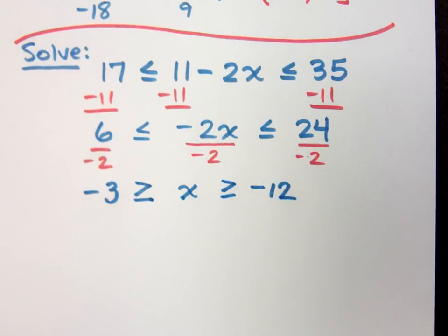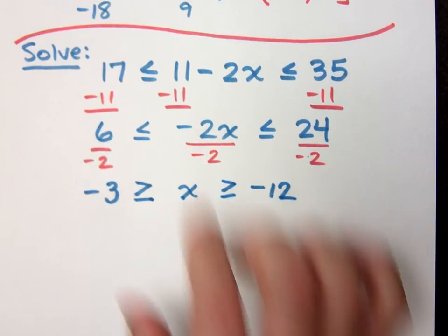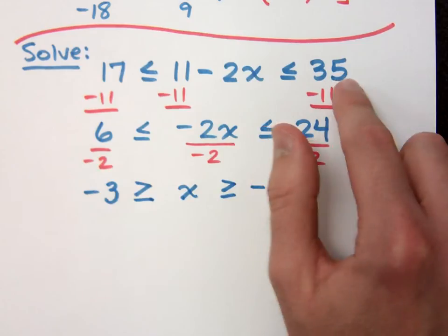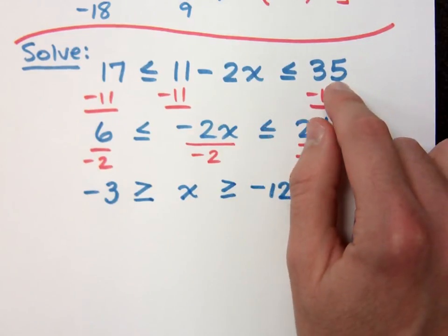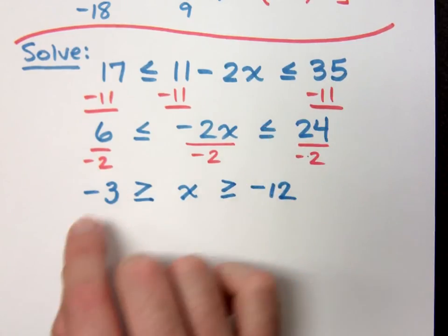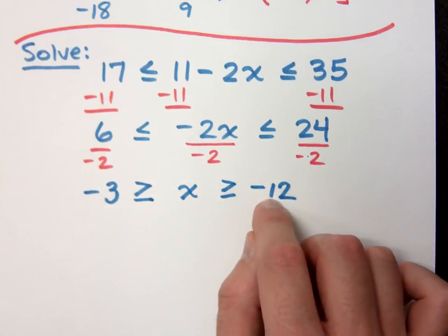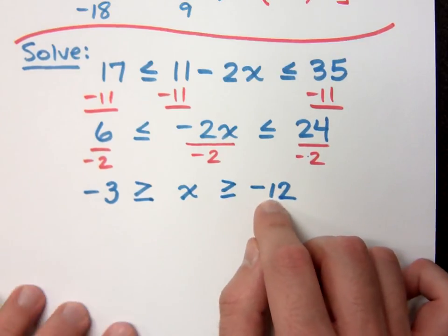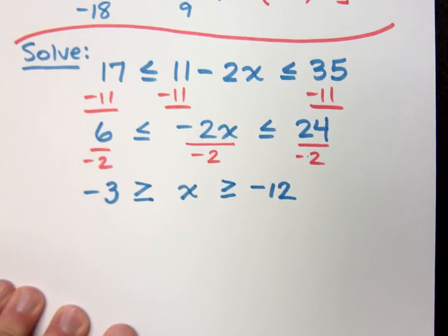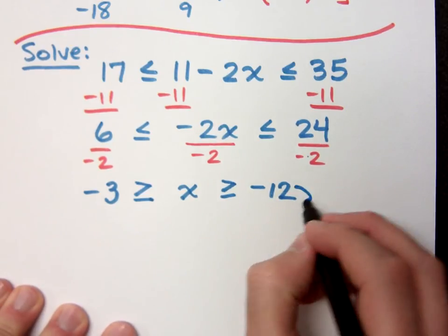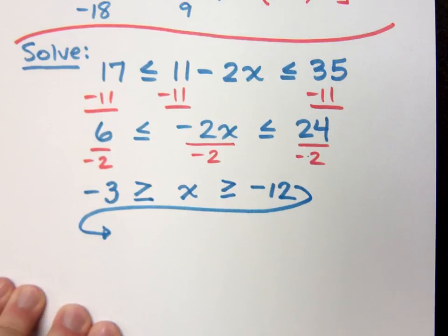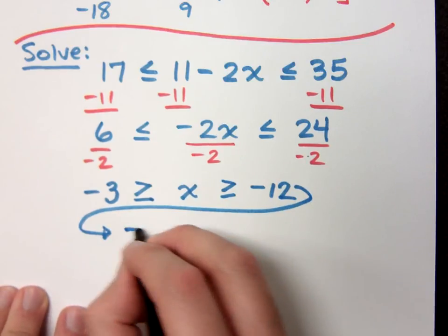Now before we go on, we want to make sure that what we have here does make sense. In the original inequality, I have that 17 is less than 35, and of course that makes sense. Down here, though, is negative 3 greater than negative 12? And the answer is yes. Now a lot of times writing it this way can be kind of confusing. We like to write this in an order from least to greatest. So if I rewrite this, I say negative 12 is less than or equal to.